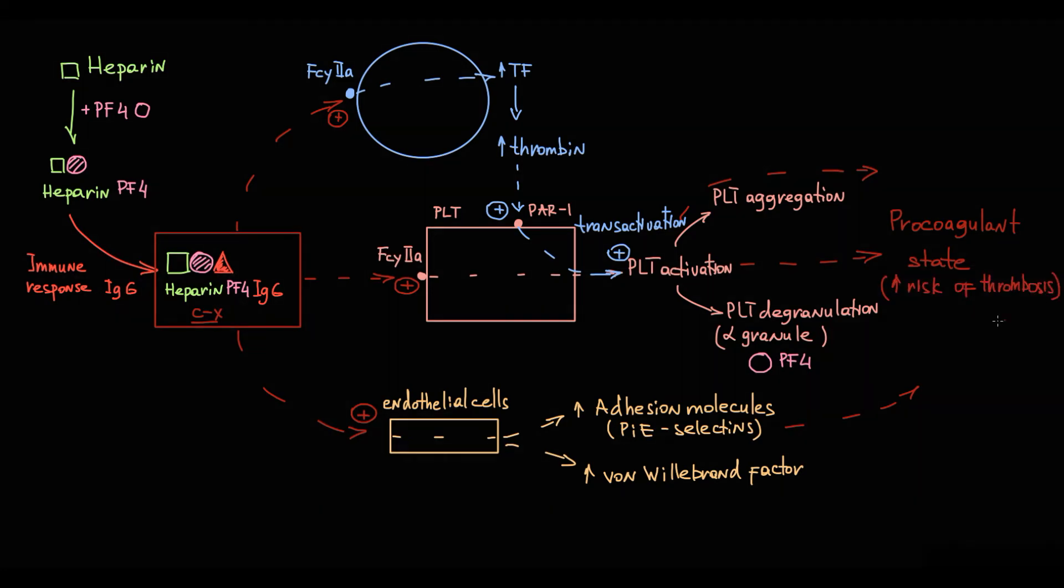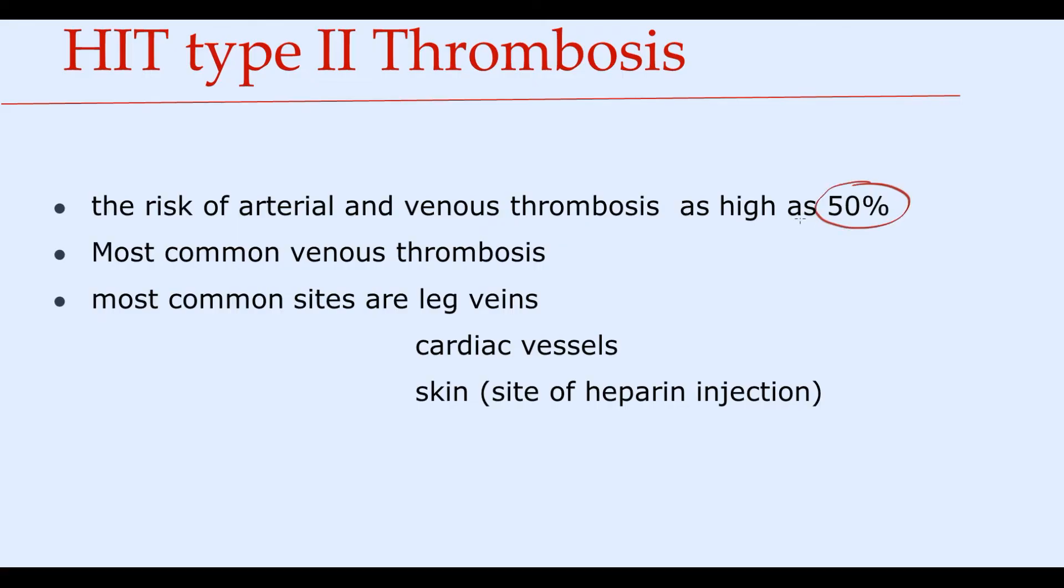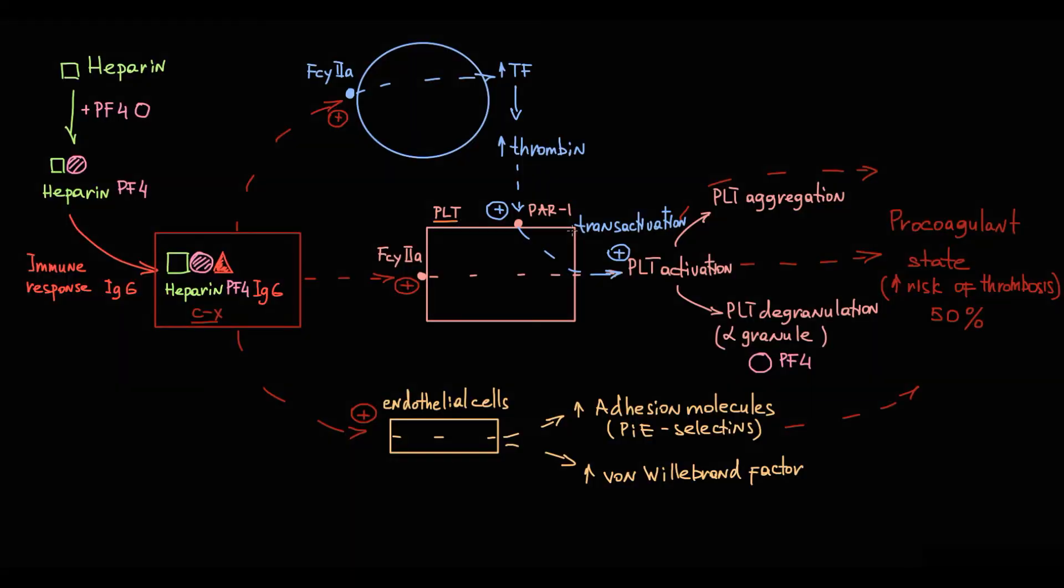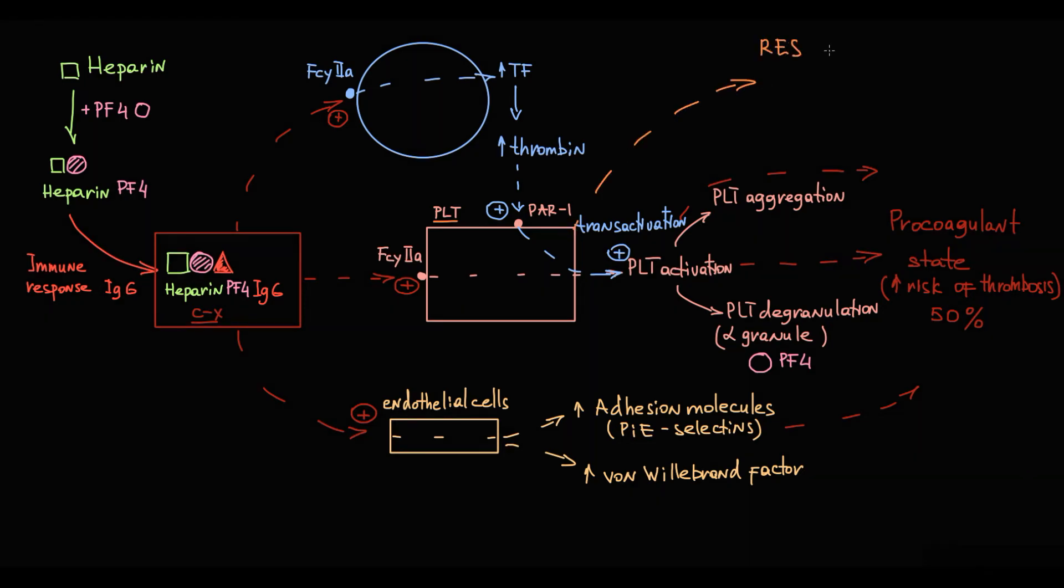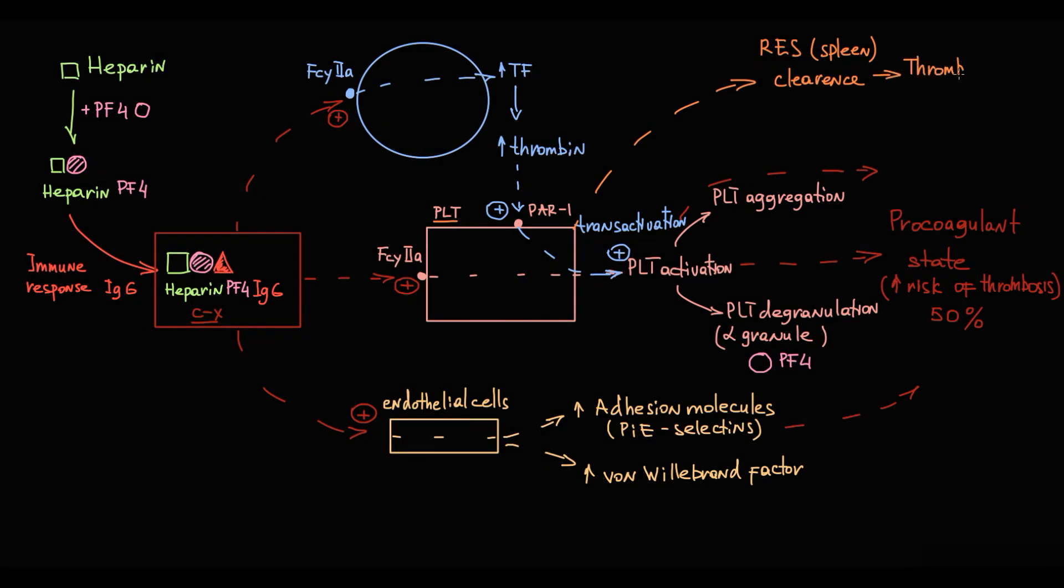In fact, the risk of arterial and venous thrombosis is as high as 50%. Most commonly venous thrombosis occurs, and the most common sites are leg veins, cardiac vessels, and the skin at the site of heparin injection. Activated platelets that have antigen-antibody complexes on their surface are rapidly cleared from the blood by the reticuloendothelial system, primarily by the spleen, and this results in thrombocytopenia.